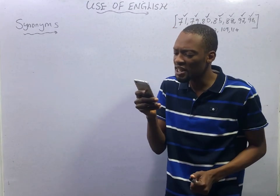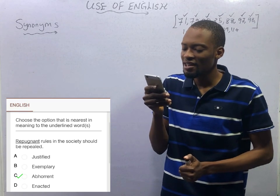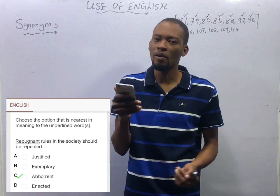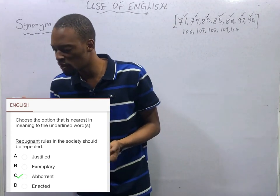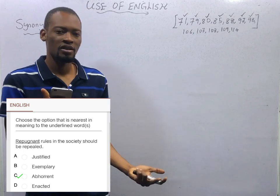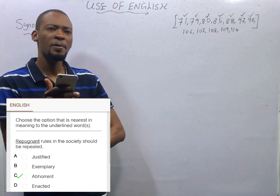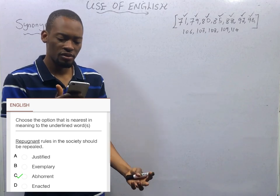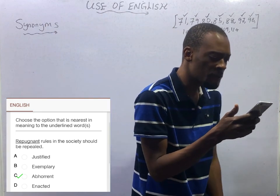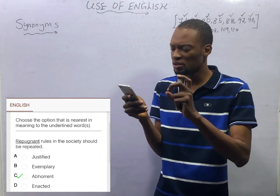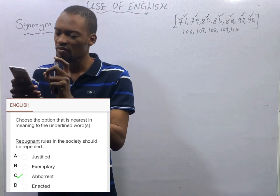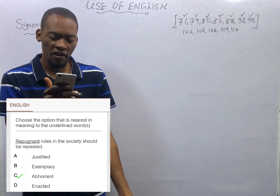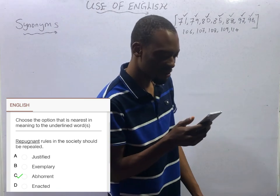'Repugnant rules in society should be repealed.' What does it mean for rules to be repugnant? It simply means extremely distasteful, repulsive, repellent, offensive, revolting, or abhorrent. Out of justified, exemplary, and enacted, the nearest in meaning to repugnant is abhorrent — which means repulsive, repelling, offensive, and repugnant. That makes option C the correct option.